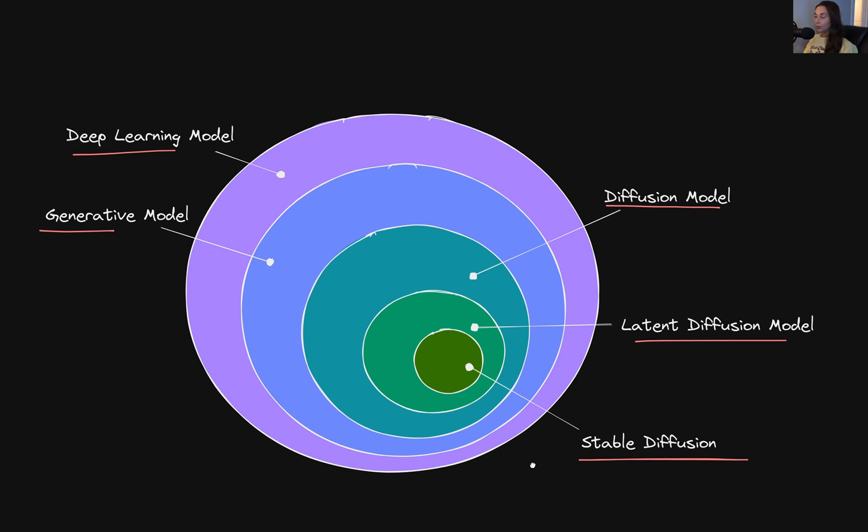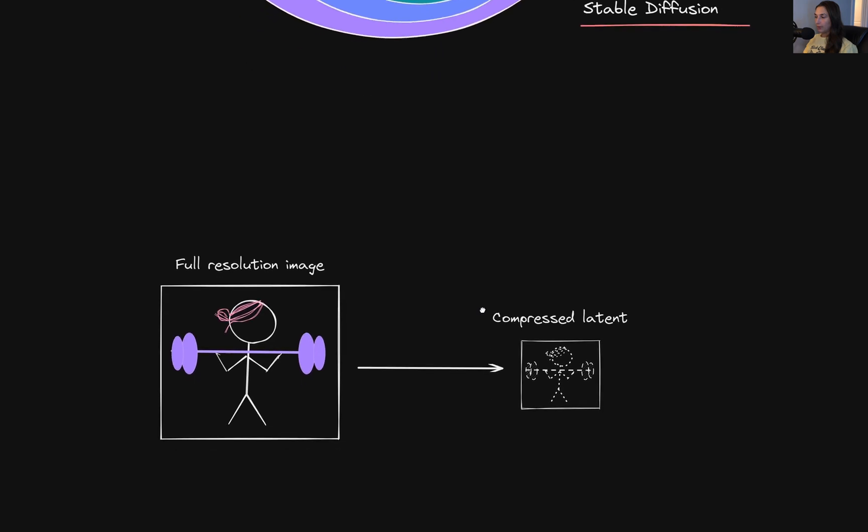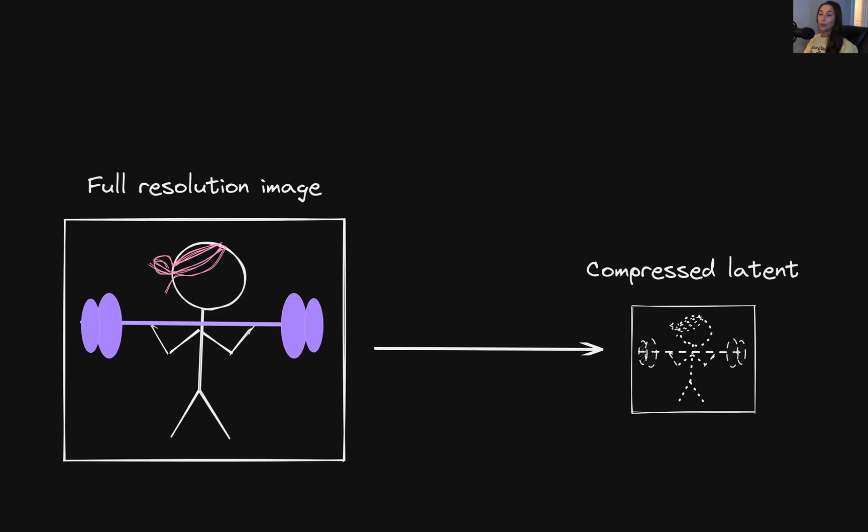So here is where latent diffusion models come into play. Latent diffusion models actually work with compressed representations of the original image data, and these compressed representations are referred to as latents. So in other words, latent diffusion models work in lower dimensional latent space rather than higher dimensional pixel space, which reduces the amount of computational resources and therefore improves efficiency.